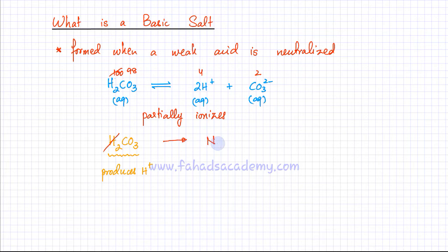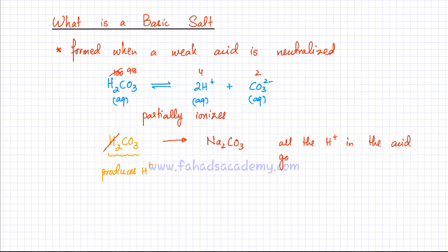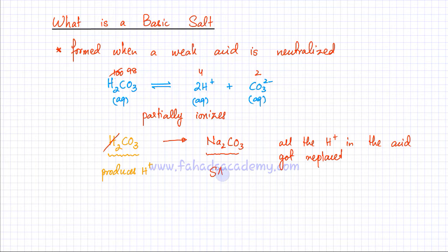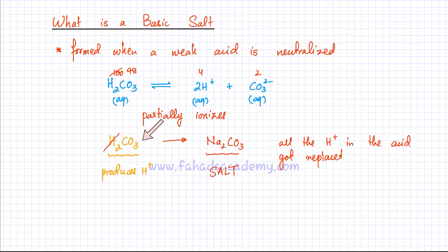For example, I can replace the H⁺ ions with sodium ions, so the formula is going to be Na₂CO₃. All the H⁺ ions in the acid got replaced by another positive ion. This is called a salt — it's called a salt because it's no longer able to act as an acid. Na₂CO₃ doesn't have any H⁺ ions, so it wouldn't be able to produce H⁺ ions, meaning the acid has been neutralized and a salt is formed.